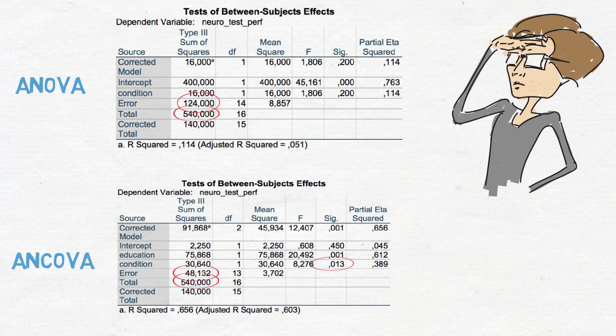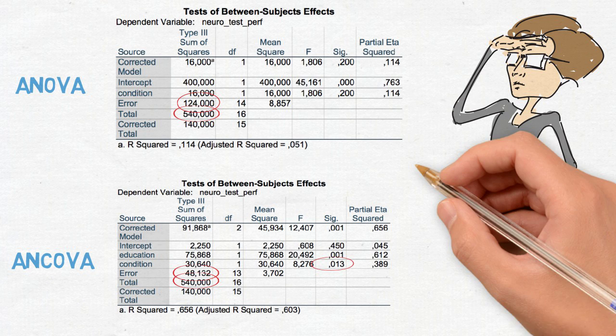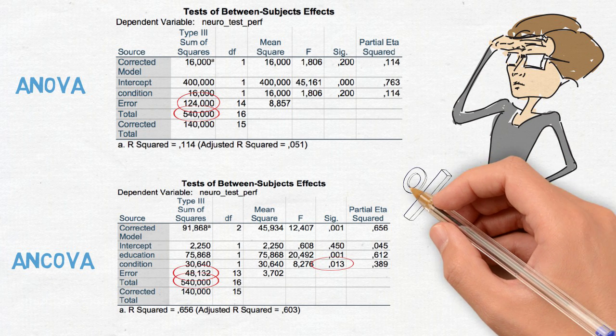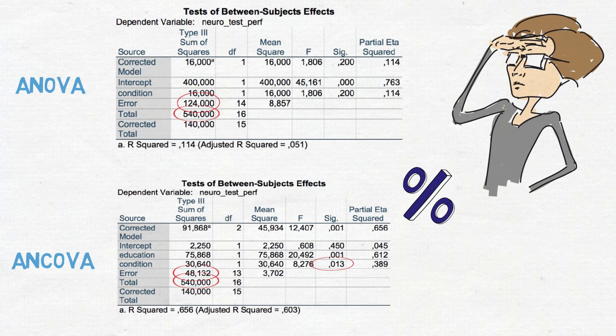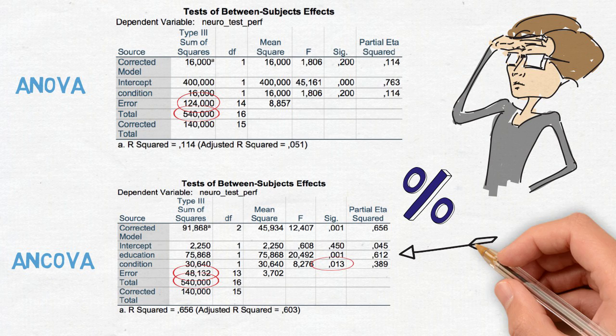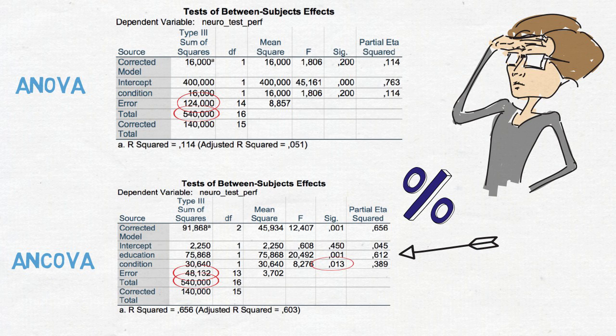You can and you should also calculate effect sizes. For example, in this case, partial eta squared. This effect size expresses the proportion of variance not explained by other variables included in the analysis. In this case, the covariate was able to explain 61% that could not be explained by other variables.